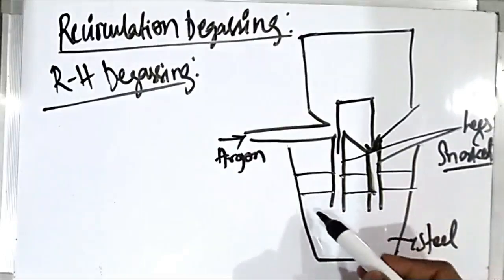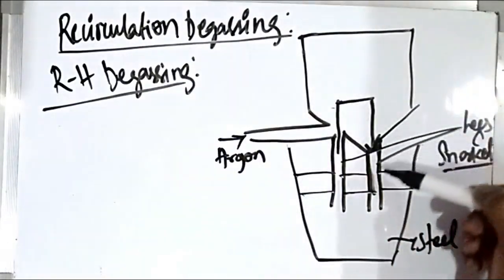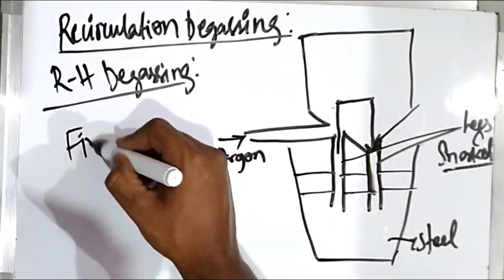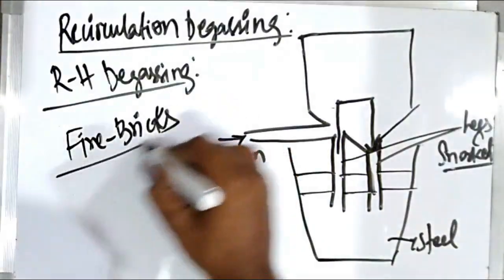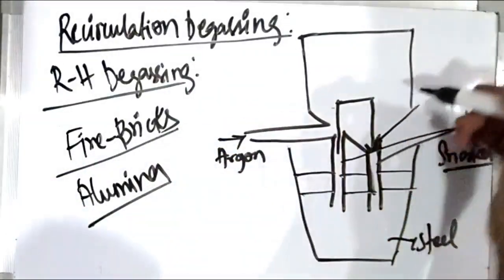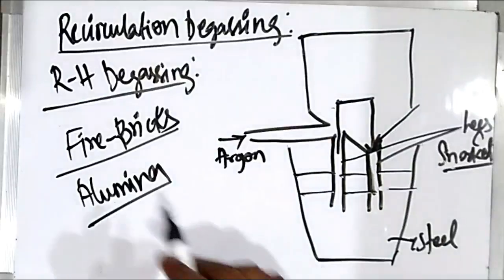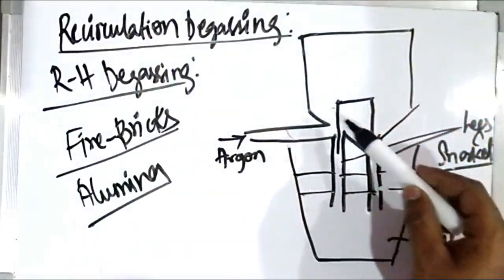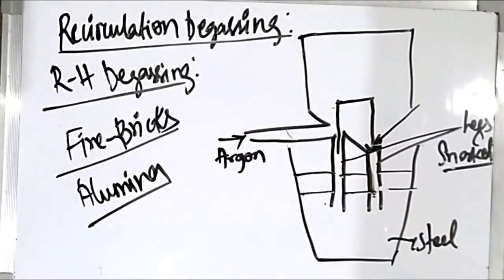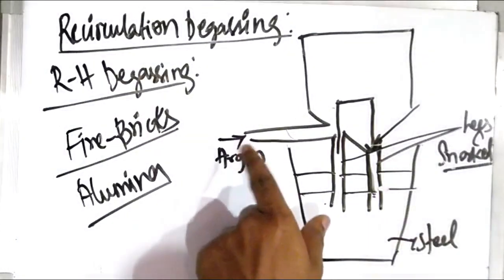The steel is raised in one leg and falls back from the other after degassing. The cylindrical shell is lined with fire bricks as refractories in the upper portion, and alumina bricks are used in the lower portion including the legs. These refractories are used to sustain the high temperatures involved. The legs are also lined with alumina refractories.